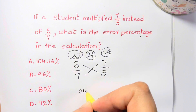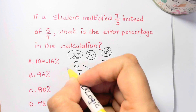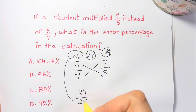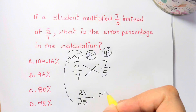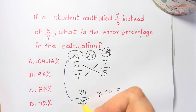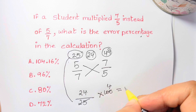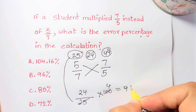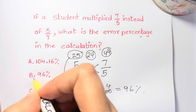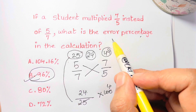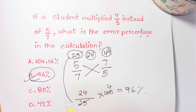24 divided by the actual value, which is 25, times 100 — so 24 times 4 is 96 percent. That's your answer, choice B: the error percentage is 96 percent. Thank you so much, bye bye, take care.